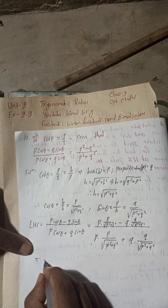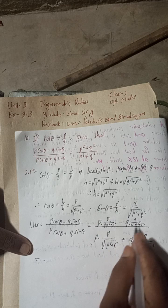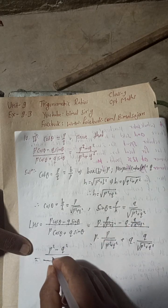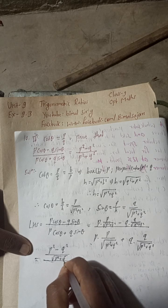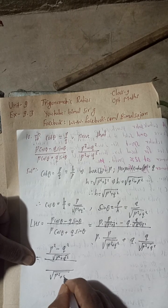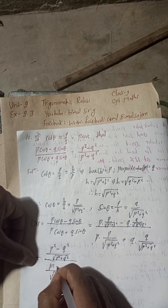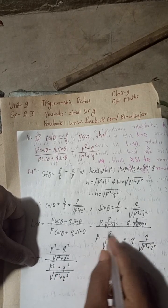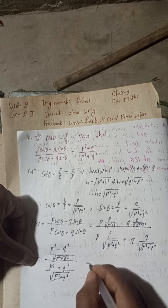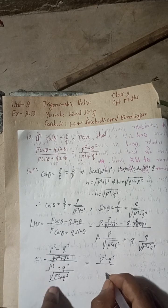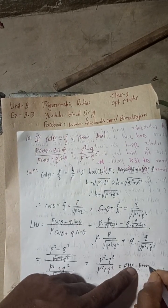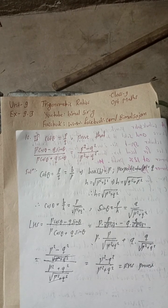Since the LCM is the same — root under (p squared plus q squared) — the numerator becomes p squared minus q squared, and the denominator becomes p squared plus q squared. Both denominators cancel, giving us (p squared minus q squared) over (p squared plus q squared), which equals RHS. Hence proved.